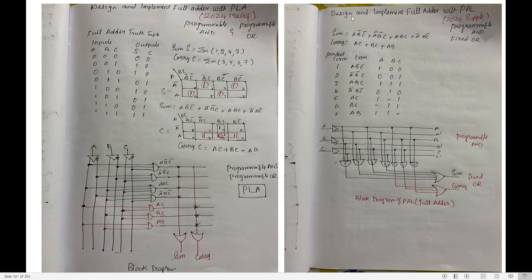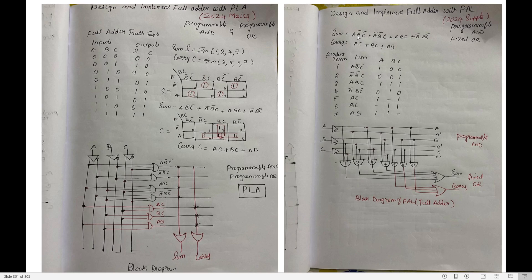The same circuit, if you want to design using PAL: the question is asked in the next year — design and implement full adder with PAL. Write the same truth table of full adder, then solve for sum and carry using K-map and write both formulas. PAL stands for programmable AND and fixed OR, whereas PLA stands for programmable AND and programmable OR. For PAL, AND is programmable and OR is fixed. Now, how many product terms total? Sum has 4 terms and carry has 3 terms — together that is 7 product terms.